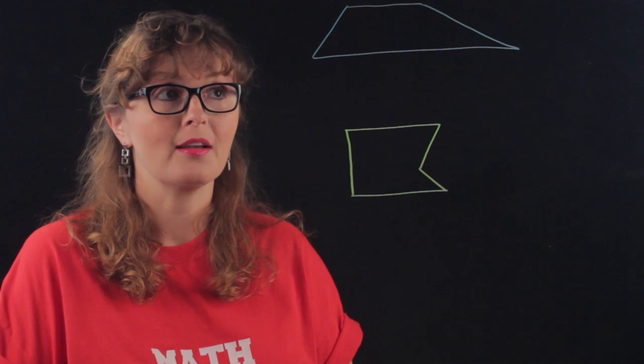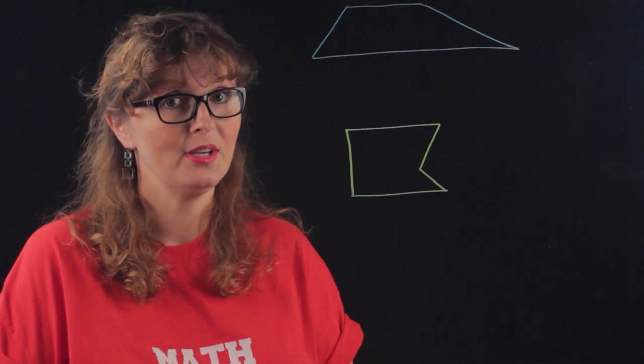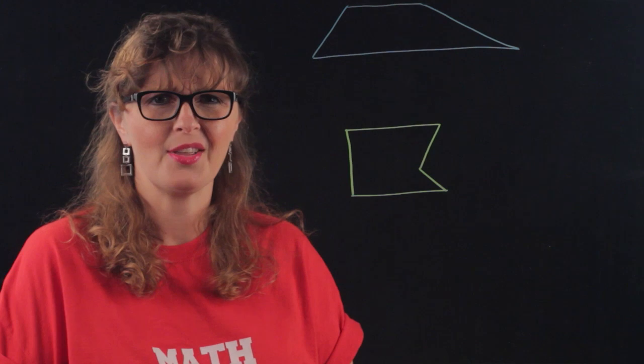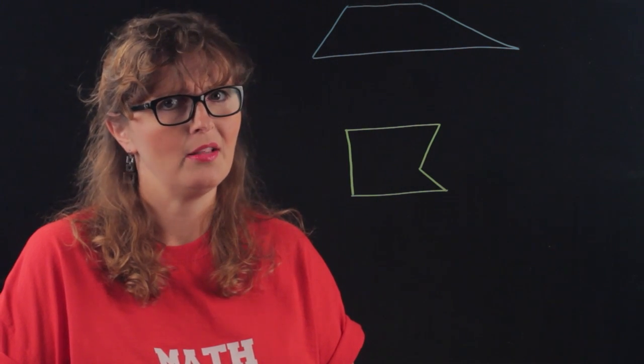So here we have two polygons. We have a trapezoid that's kind of awkward looking and then we have this other kind of crazy polygon.